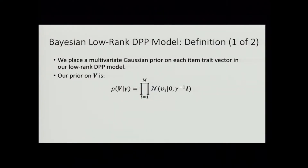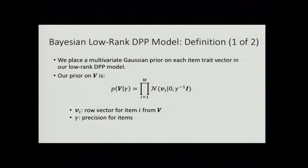We came up with a Bayesian version of the model to address the regularization issues, which also gives us other benefits. The Bayesian model is relatively simple: we place a multivariate Gaussian prior on each item trait vector. Our prior on V is a zero-mean multivariate Gaussian, where Vi is the row vector for a particular item and gamma is the precision parameter on the items. We draw gamma from a gamma distribution — this is a conventional normal-inverse-gamma formulation.